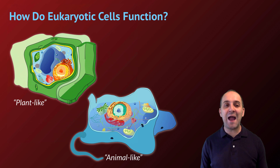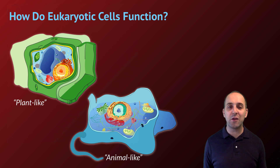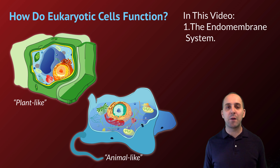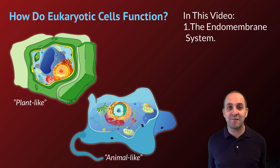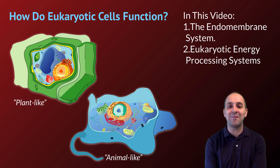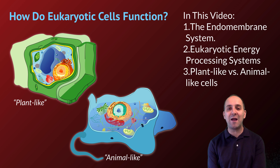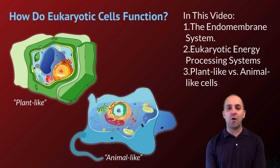In this video we're going to try to answer the question of how do eukaryotic cells function — plant-like eukaryotes and animal-like eukaryotes. We're going to talk about a system called the endomembrane system as an example of one of the major ways that eukaryotic cells process information and matter. We're going to look at eukaryotic energy processing systems — mitochondria and chloroplasts — and talk a little bit about plant-like versus animal-like cells to round it all out.